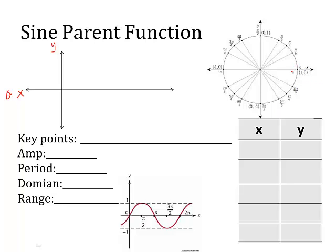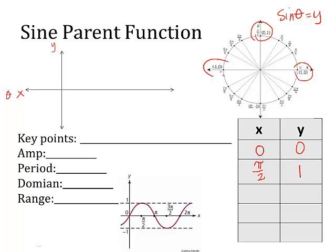Starting at angle zero — remember, sine is always the y coordinate. So what's the y coordinate where the angle is zero? Well, it's zero. Pi over two is our next angle, our next x value. What's the y coordinate? It's one. The next angle we want to look at is pi. What's the y coordinate? Zero.